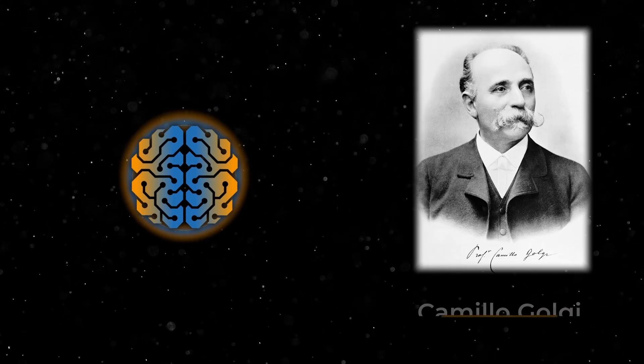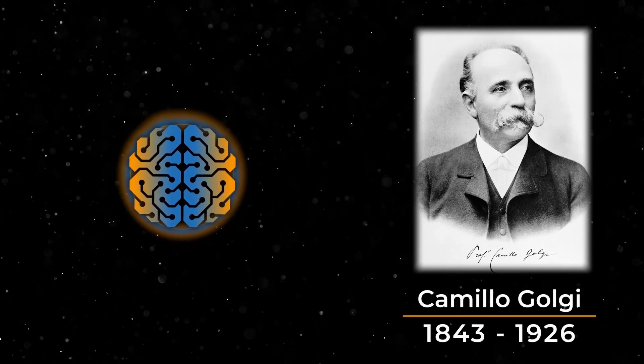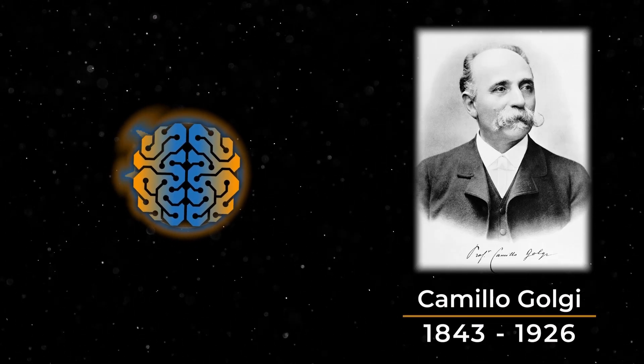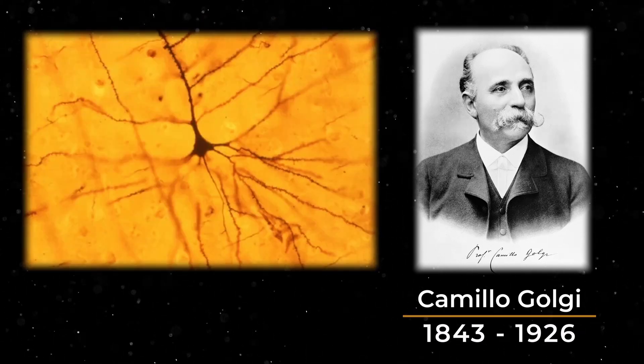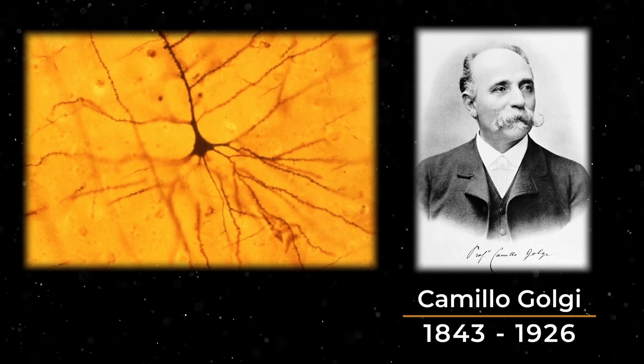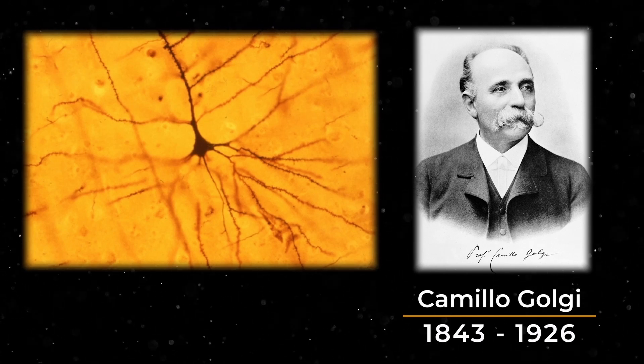Camille Golgi, a strong supporter of the reticular doctrine, developed a staining technique that allowed for individual observation of the neurons, by staining the observed tissue and contrasting it against a bright background.